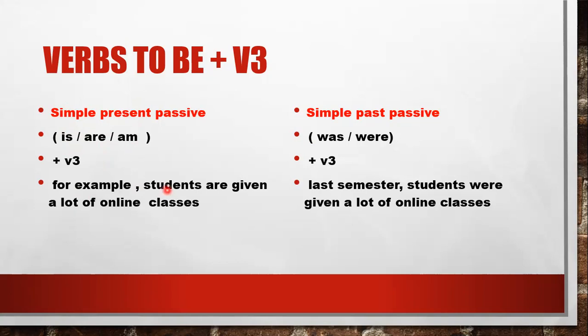For example: 'Students are given a lot of online classes.' هاي مثال على الباسف بالمضارع - استخدمنا are مع التصريف الثالث given.